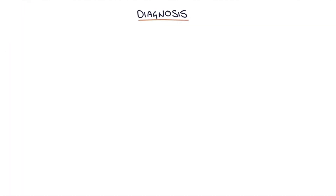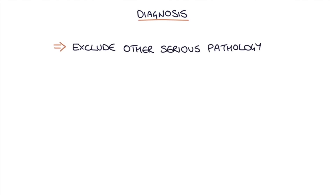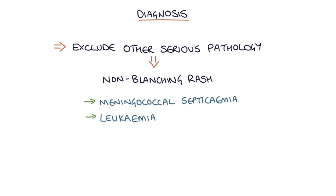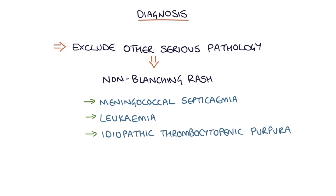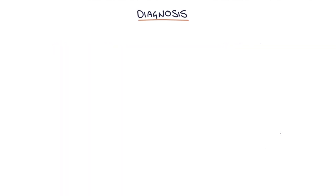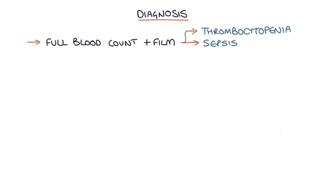The most important initial step in diagnosis is to exclude other serious pathology in any child presenting with a non-blanching rash, such as meningococcal septicaemia and leukaemia. Idiopathic thrombocytopenic purpura and haemolytic uraemic syndrome are also differential diagnoses. Key investigations include a full blood count and blood film for thrombocytopenia, sepsis, and leukaemia.